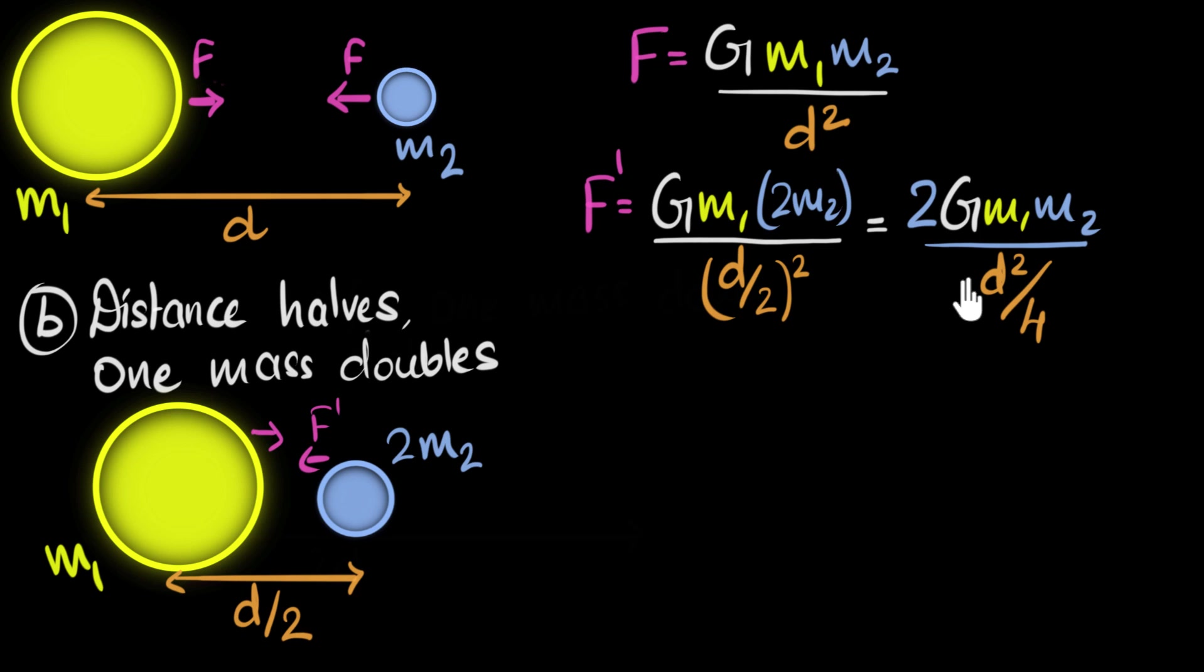And now we just have to simplify this. Let me pull that 2 out. So we get 2G M1 times M2 divided by d by 2 whole squared becomes d squared divided by 4. Now let's be a little careful because there's a fraction in the denominator. Here what I like to do is I like to remember that dividing by something is the same thing as multiplying by its reciprocal. And so we can now say F dash is going to be 2G M1 M2 into the reciprocal of this, 4 over d squared.